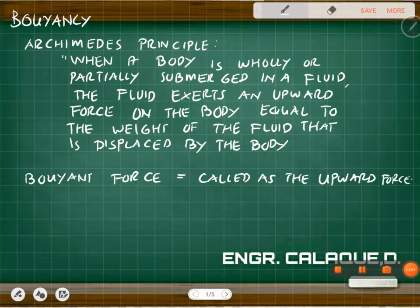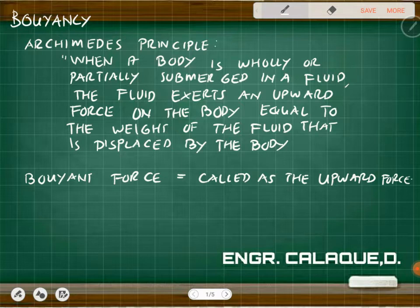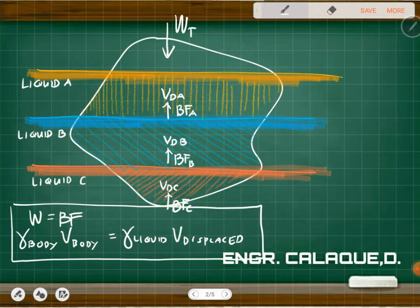Let's talk about buoyancy. According to Archimedes' principle, when a body is fully or partially submerged in a fluid, the fluid exerts an upward force called the buoyant force. This upward force on the body is equal to the weight of the fluid that is displaced by the body. That upward force is the buoyant force.